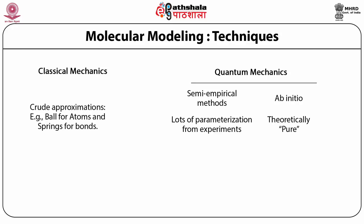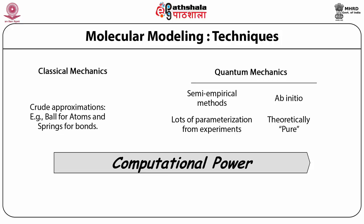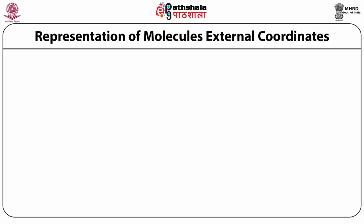Which method to use — classical or quantum mechanics? The answer lies in the computational power required. Classical methods are crude but operate for very large systems — proteins, nucleic acids with hundreds or thousands of atoms. Quantum methods require a lot of computational power. Semi-empirical methods can be used for moderately large systems of about 100 to 200-300 atoms, but ab initio methods, which are theoretically pure and make no assumptions, require huge computational power and can only study very small systems with perhaps tens of atoms.